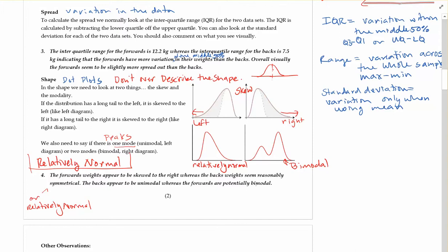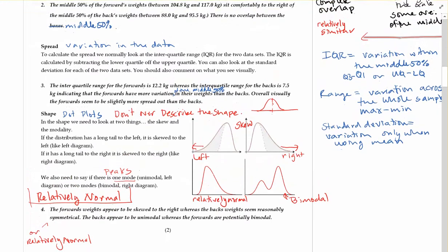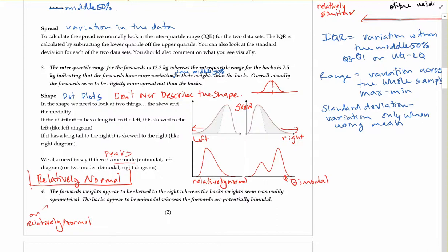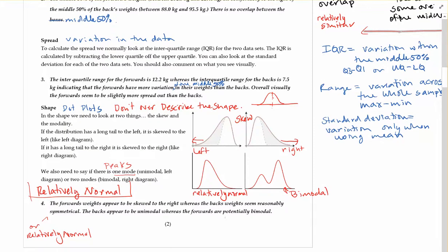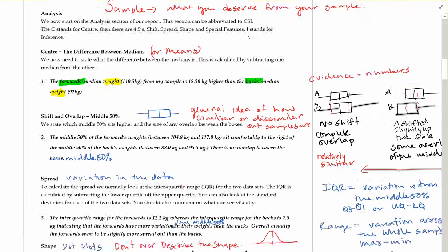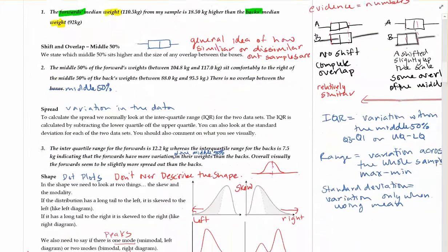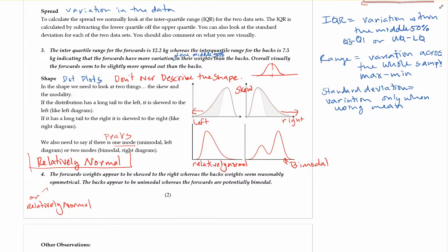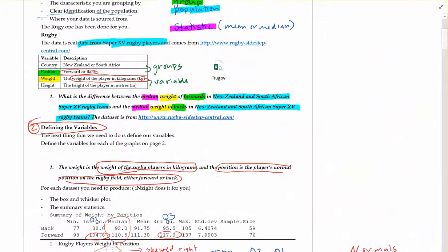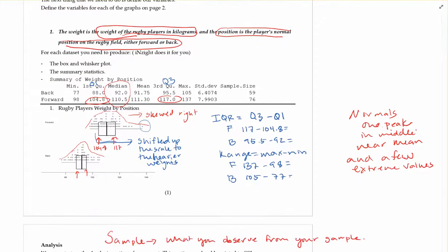Whereas the forwards are potentially bimodal. I might not even go so far as to say that. Just say that the forwards have more variation. Or potential of multiple little peaks. And not go so far as to say exactly what or where they are. So don't over-describe it. And just keep looking for those kind of key features.